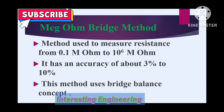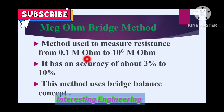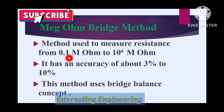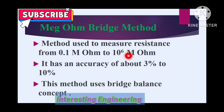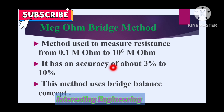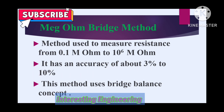As the name itself suggests, this is the megohm measurement. It measures resistance from about 0.1 megohm to 10^6 megohm, and this method has an accuracy of about 3% to 10%.